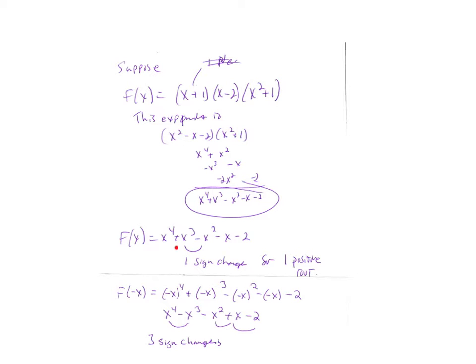So Descartes' Rule of Signs says, take a look at the right rule for the original function. Count the number of sign changes. I see one sign change. It goes from a positive to a negative and then it stays negative. So one sign change. So that tells me there's one positive root.